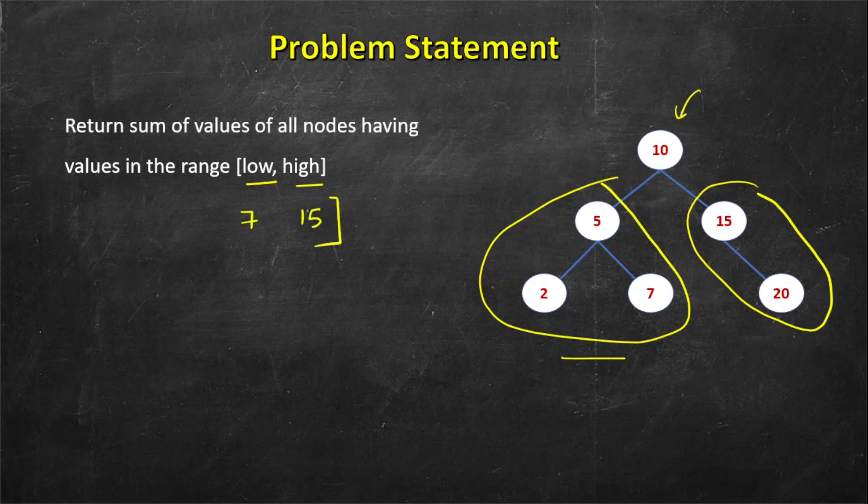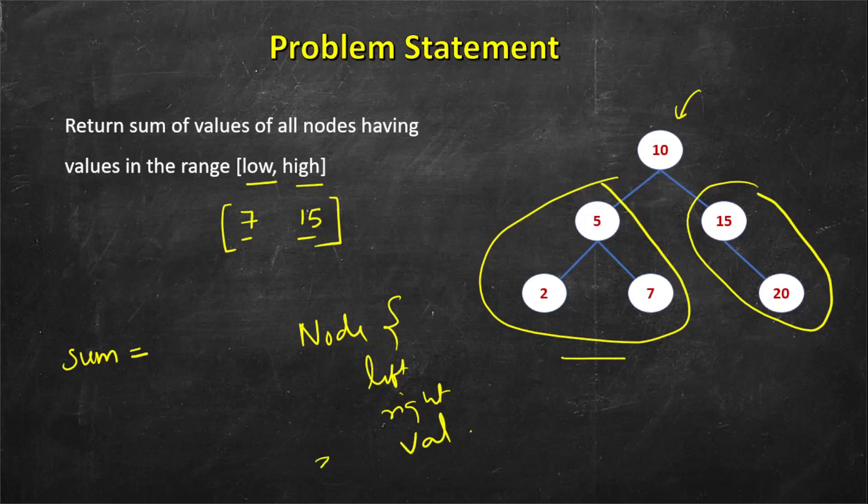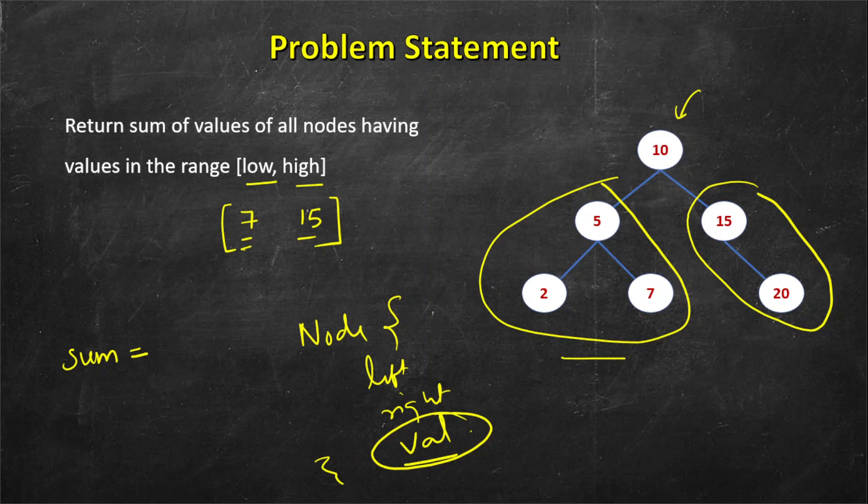This is an inclusive range so 7 is included, 15 is included. What you have to do is return the sum of values of all the nodes. A node has left, right and val. You have to visit all the nodes, check if it lies in this range inclusive. If it lies in this range then you add to the result, otherwise you ignore that node. You have to return the final sum. Let's see how we can do it.